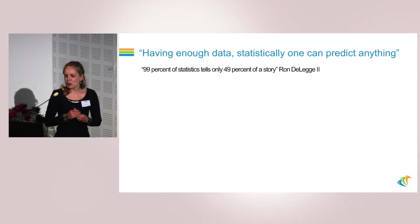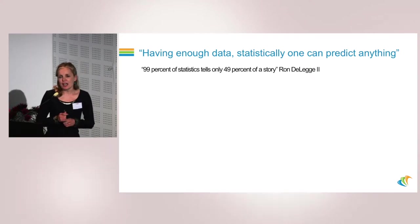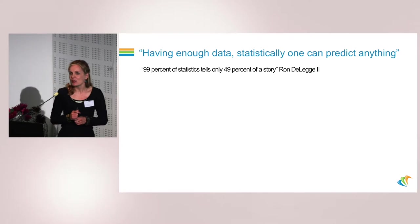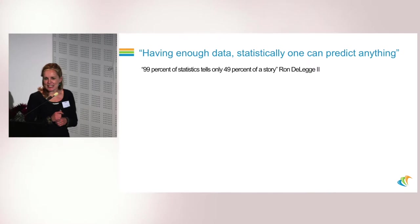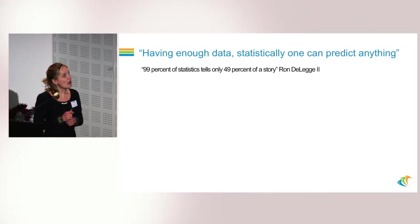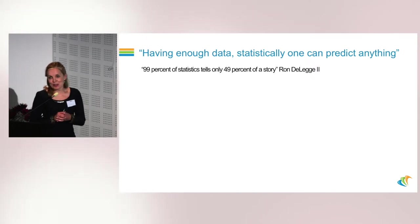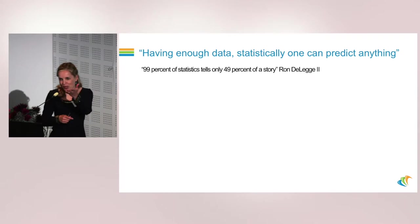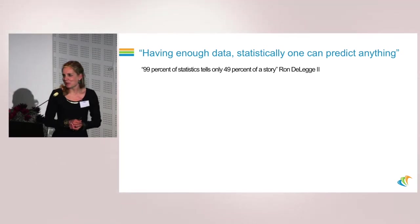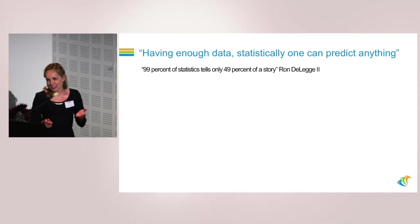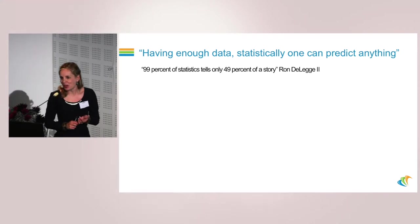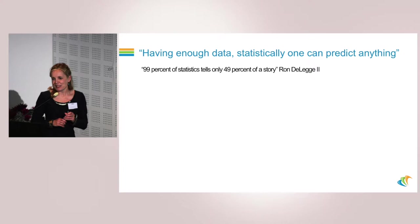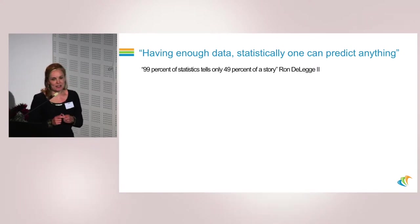In one of the books about Wall Street, Ron DeLegger mentions that 99% of statistics tells only 49% of a story. So keep that in mind. That's why machine learning doesn't apply to sports, as a university professor pointed out. It doesn't apply to politics, or is frequently misused in politics. And for the same reason, it probably in certain cases doesn't apply to geophysics.